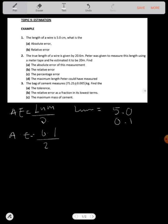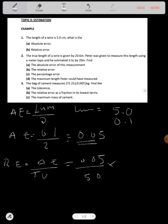Then your relative error RE is equal to absolute error over true value. Your absolute error in this case is 0.05 divided by true value, which is 5.0. Now I need to express this as a simple fraction, so I multiply both sides by 100.